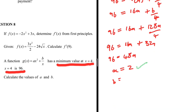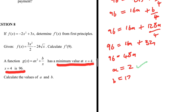Now we find b using b = 128a and a = 2: b = 128 × 2 = 256. So a = 2 and b = 256. That completes question 8.